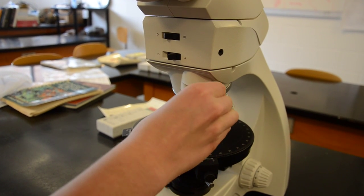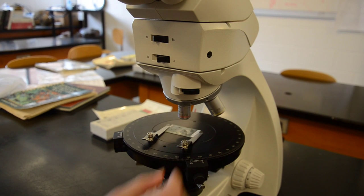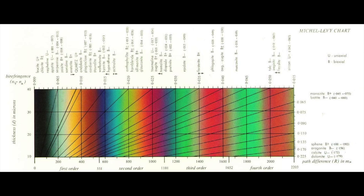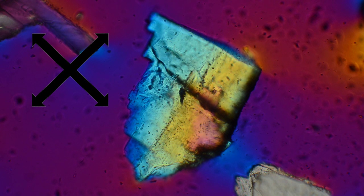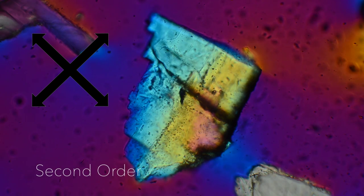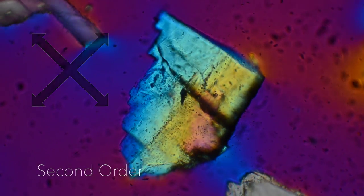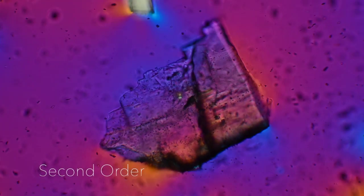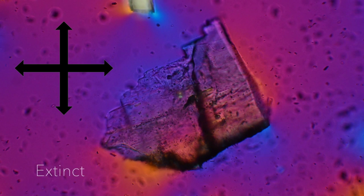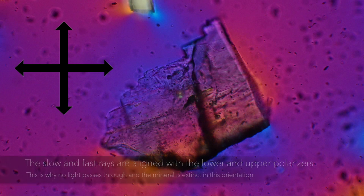Here I insert my accessory plate. Inserting the accessory plate will make the material appear magenta at the extinction positions because the plate's retardation displays a first-order magenta. This is the view of the same mineral with the accessory plate inserted. Here our mineral now displays second-order interference colors. Now I am going to rotate the stage 45 degrees to observe what this mineral looks like in an extinction position with the accessory plate inserted. You will notice that it is magenta instead of black.